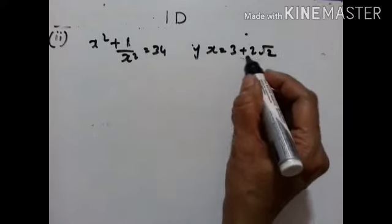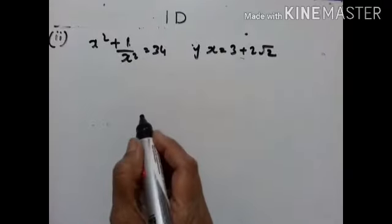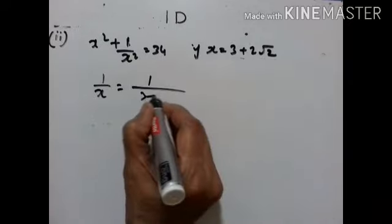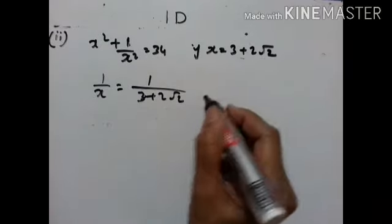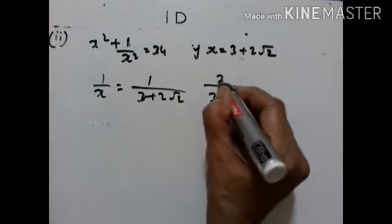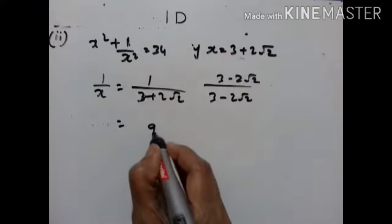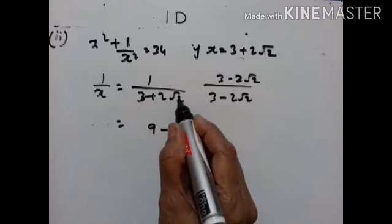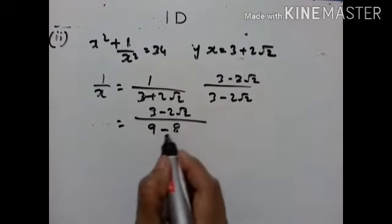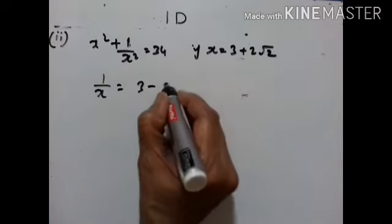Value of x is given as 3 plus 2√2. We have to prove that x² + 1/x² equals 34. 1/x = 1/(3 plus 2√2). Rationalizing the denominator using (a+b)(a−b) = a²−b²: 9 minus 8 = 1. So 1/x equals 3 minus 2√2.